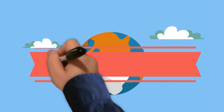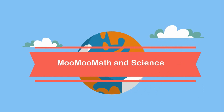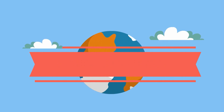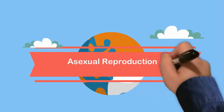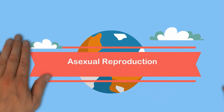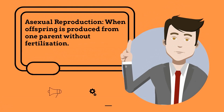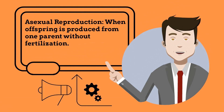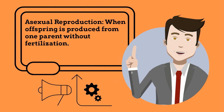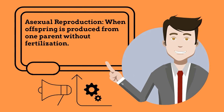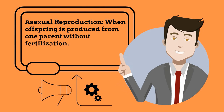Hello, welcome to Moo Moo Math and Science. In this video I'd like to talk about asexual reproduction. Asexual reproduction is when offspring is produced from one parent without fertilization.